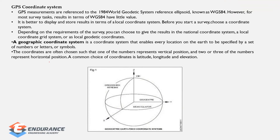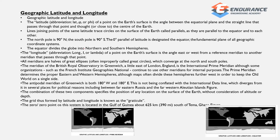The GPS coordinate system is based on the World Geodetic System established in 1984, known as WGS84. In the geographic coordinate system, you can use numbers, letters, or symbols. Geographic latitude and longitude represent the angle between the equatorial plane and the line joining the same latitude, which traces a circle parallel to the equator.